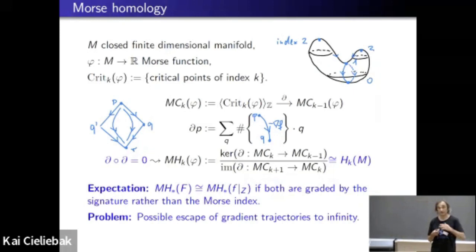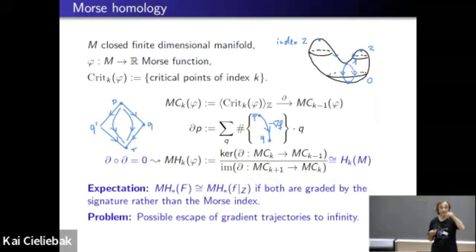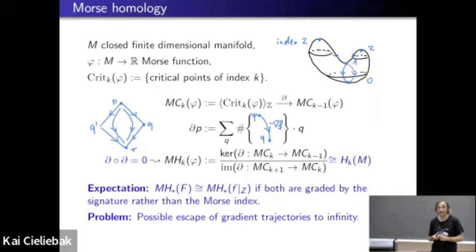This is not entirely obvious, because when you look at the gradient trajectories, they look very different. Gradient trajectories of little f restricted to the constraint remain on the constrained hypersurface, whereas for capital F they have no reason to remain on the constraint — plus the Lagrange multiplier is also moving. Even in finite dimensions it's not obvious that those have the same homology. In infinite-dimensional situations it's not clear at all, and one possible problem is that the space on which capital F is defined is never compact, because the vector space where the Lagrange multiplier lives is non-compact.